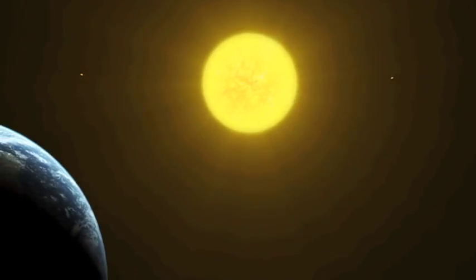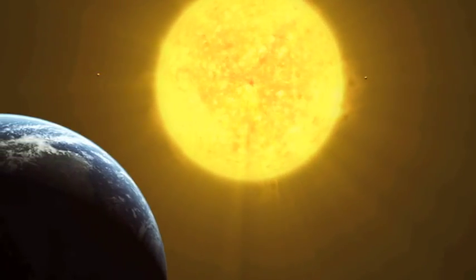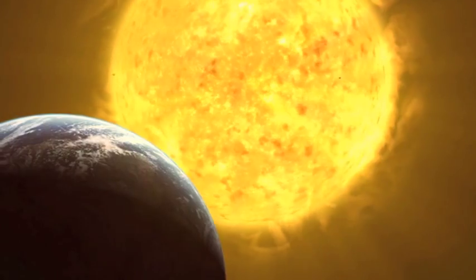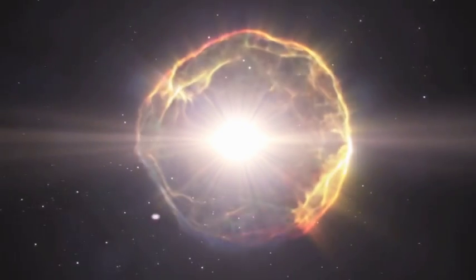When a star like our Sun has burned all of its fuel, it expands into an enormous red giant of more than ten times its original size. The star then has trouble holding on to its outer layers, which mostly blow off into space.